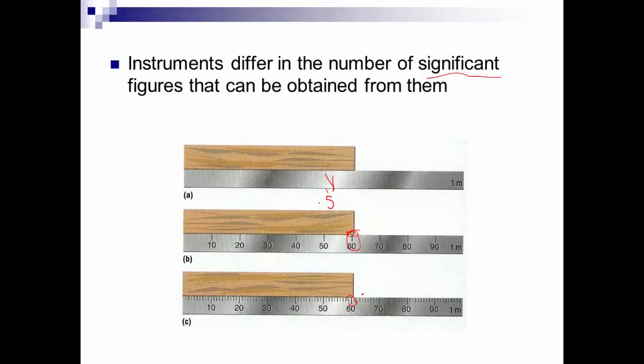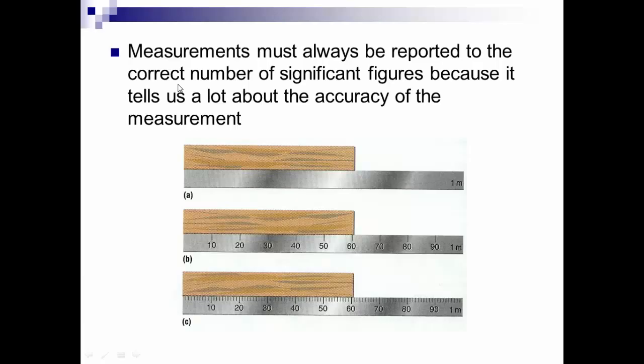Now if we break it down even more, and we see between 60 and 70, there's tenths marks. So we have 61 here. We know that our plank is really between 60 and 61. It looks to be closer to 61 than 60, so we could potentially estimate this to be, say, 60.8 centimeters. All of these digits are significant even though this last one is estimated.